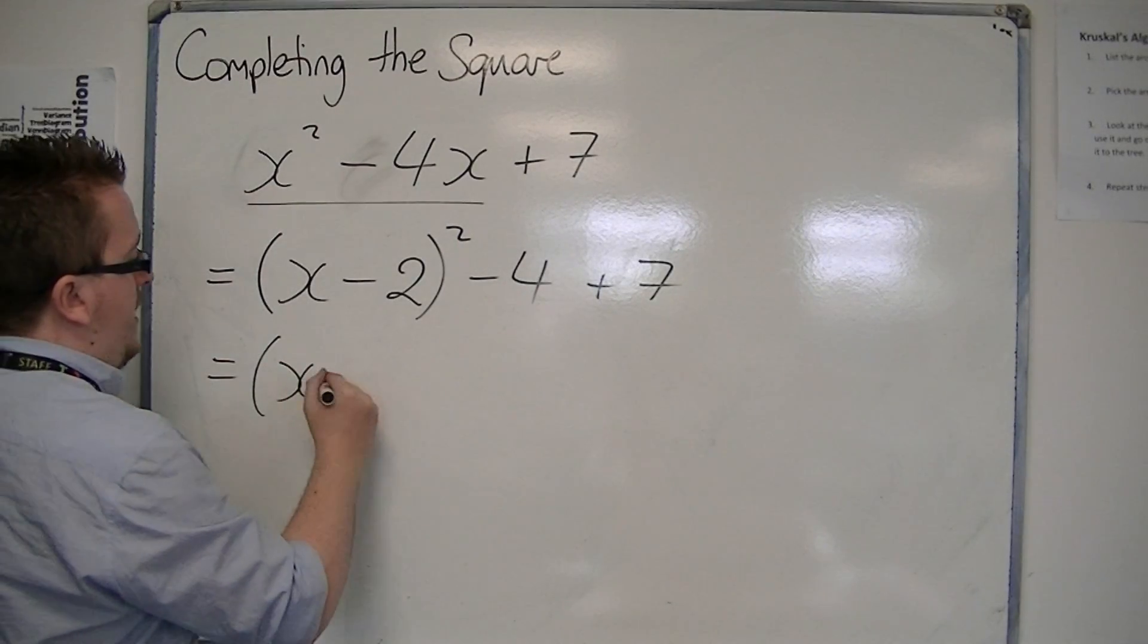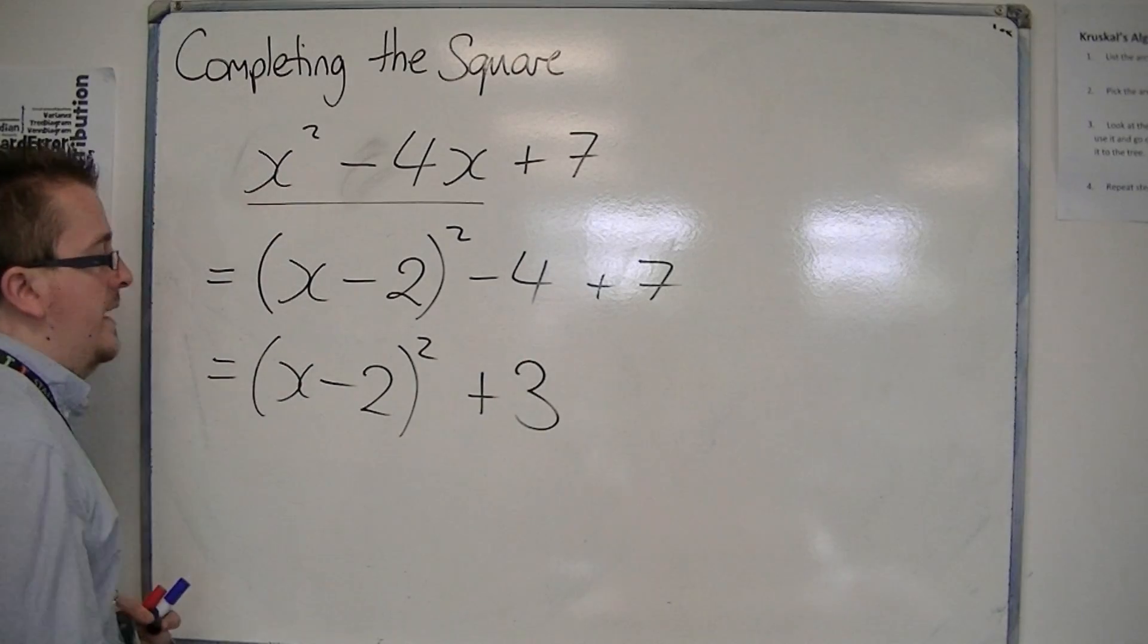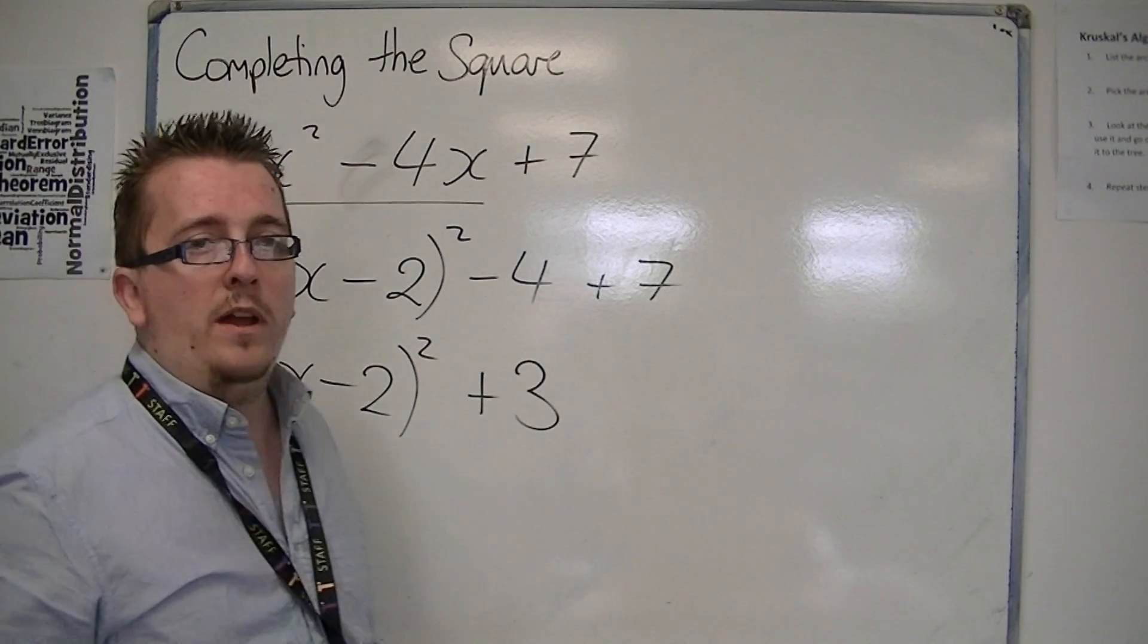So this is (x - 2)² + 3, and it is now in completed square format.